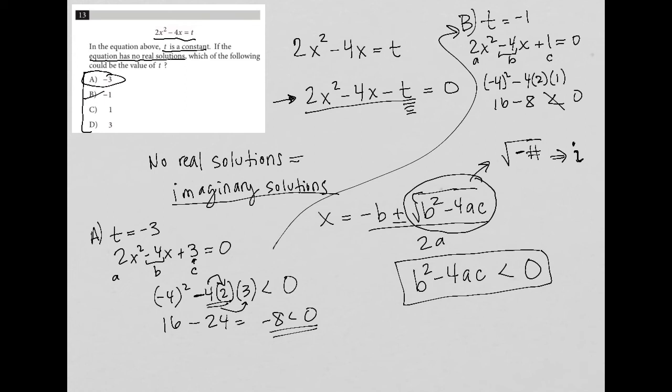And then we can kind of figure out that the rest of these values here are larger than B, and they're positive, which means that they're going to definitely not be less than 0. You can try those out if you wanted and if you had time. But the correct answer here is A.